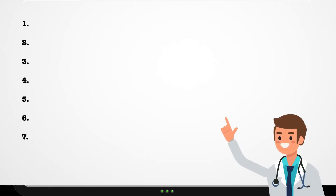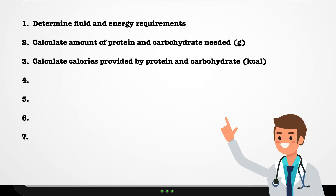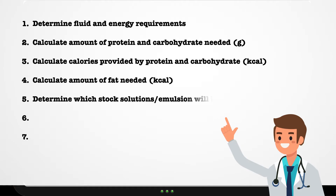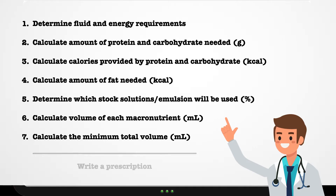We begin by looking at the seven-step algorithm. The first step is to determine the fluid and energy requirements. Then you calculate the amount of protein and carbohydrate needed in grams, and calculate the calories provided by those nutrients. Once you know the calories provided by protein and carbohydrate, you can calculate the amount of fat needed. Following that, you determine which stock solutions and fat emulsion will be used, and with this information you calculate the volume of each macronutrient. Finally, you calculate the minimum total volume for the order. Only when you have completed all of these steps will you be ready to write a prescription.